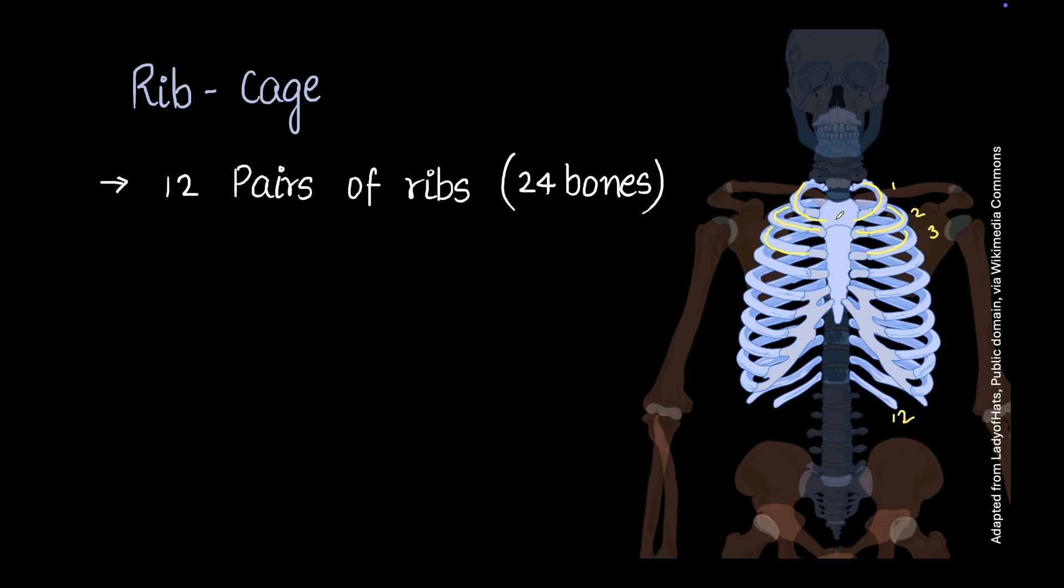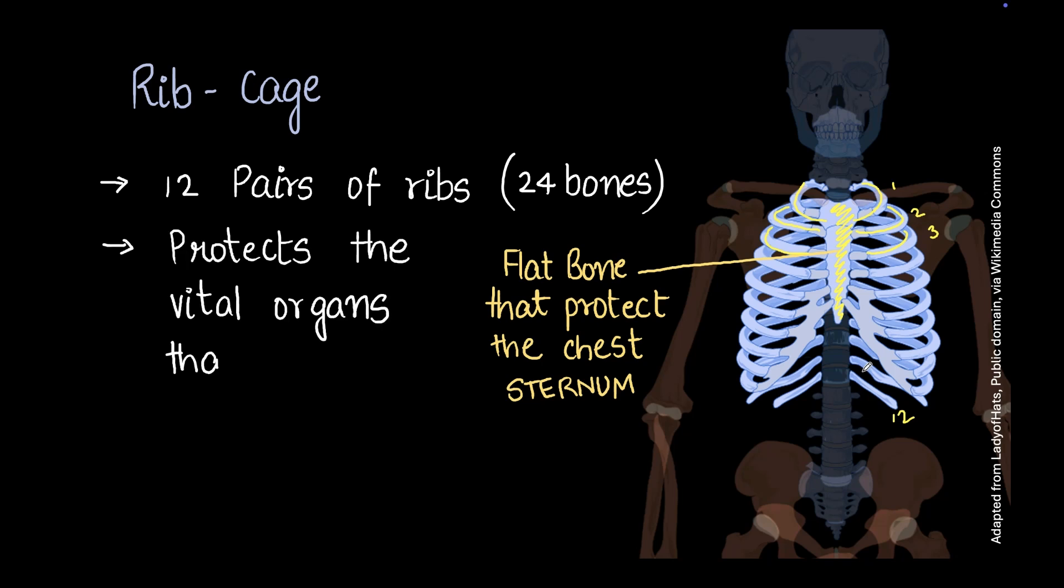The rib cage has another flat bone. If you pay careful attention, there's a flat bone here. This flat bone is basically used to protect the chest, and it is called the sternum. Now the rib cage as such has the sole purpose of protecting things like the lungs, the heart, and a lot of vital organs that are in that part of the body.